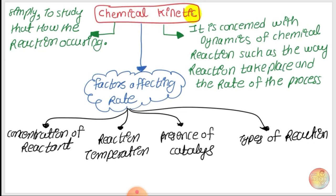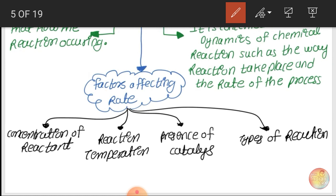The rate of reaction using chemical kinetics is affected by factors such as concentration of reactant, temperature, presence of catalyst, and type of reaction. The first factor which affects the rate of reaction is your concentration of reactant. As the concentration of the reactant increases, the rate of the reaction will decrease.